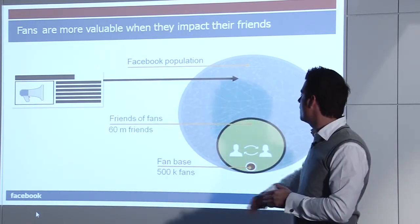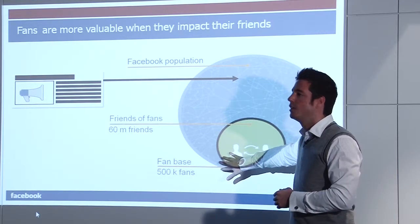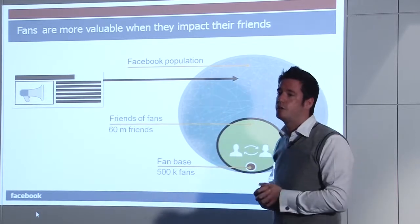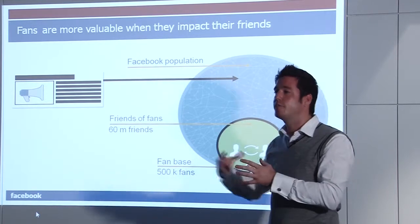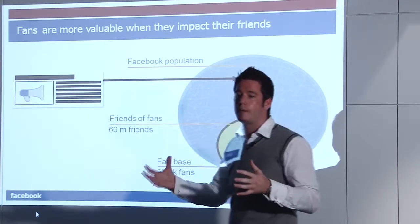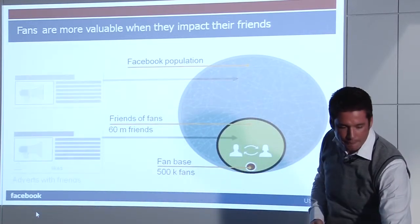Facebook says if you've got 500,000 fans, which I believe is one or two brands in the country that do, you potentially have the reach of 60 million that can be part of that fan page. We have an internal tool at Ibari that can help look at the friends and connections of your brands to see what is the true potential of that brand page. It's really great for setting objectives.